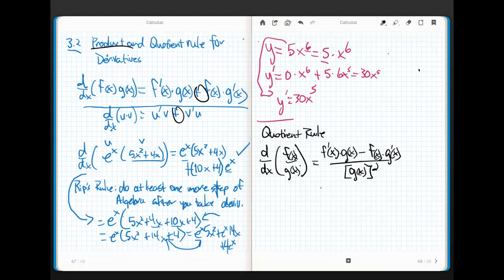The mnemonic that I use to remember this is low d high. In other words, the low as it stands times the derivative of the top. That's what d means in calculus if I say d something. Low d high minus high d low all over low squared. That's the quotient rule.